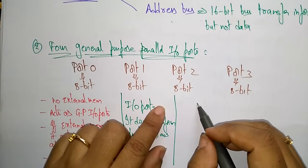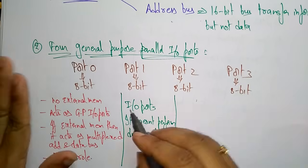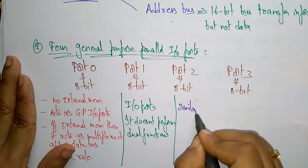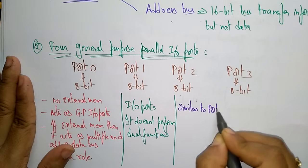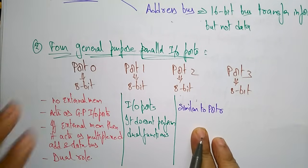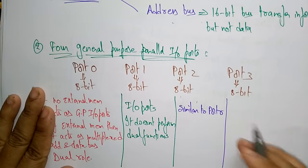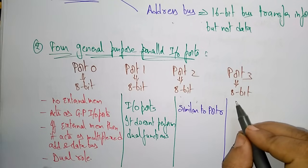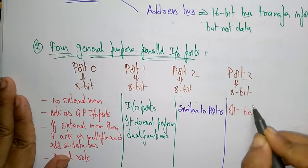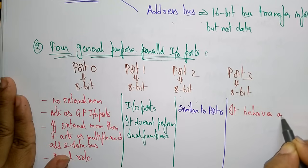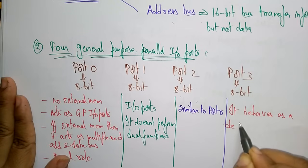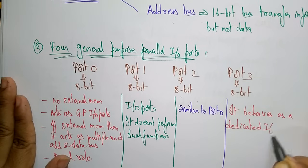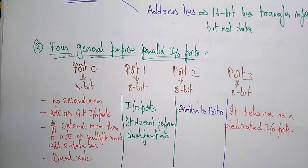Port 2 is similar to Port 0 and can be used as a general purpose I/O port. Port 3 behaves as a dedicated I/O port. So these are the four general purpose parallel I/O ports: Port 0, Port 1, Port 2, and Port 3.